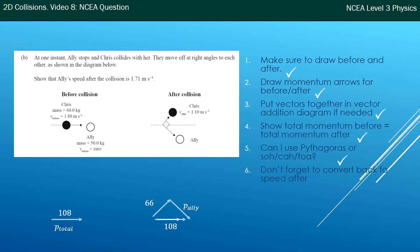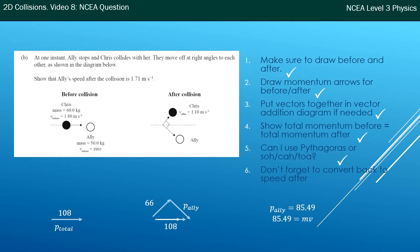Now I've got two parts of this right-angled triangle. I'll use Pythagoras: a² + b² = c². Putting in the numbers: 66² + b² = 108². The 108 is the hypotenuse — the longest side of that triangle. Rearranging gives b² = 7000, so b ≈ 85. But don't forget to convert back to a speed — 85 is a momentum value. So Ellie's momentum is 85 kg·m/s. Momentum = mass × velocity; her mass is 50 kg, so velocity = 85/50 = 1.7 m/s. That's roughly a merit-level question.